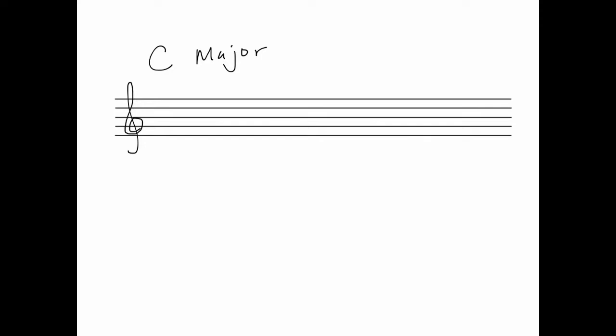So the C Major scale has no sharps or flats, so we don't need to write anything in the key signature. We'll start on C and write out all the notes ascending: C, D, E, F, G, A, B, C.